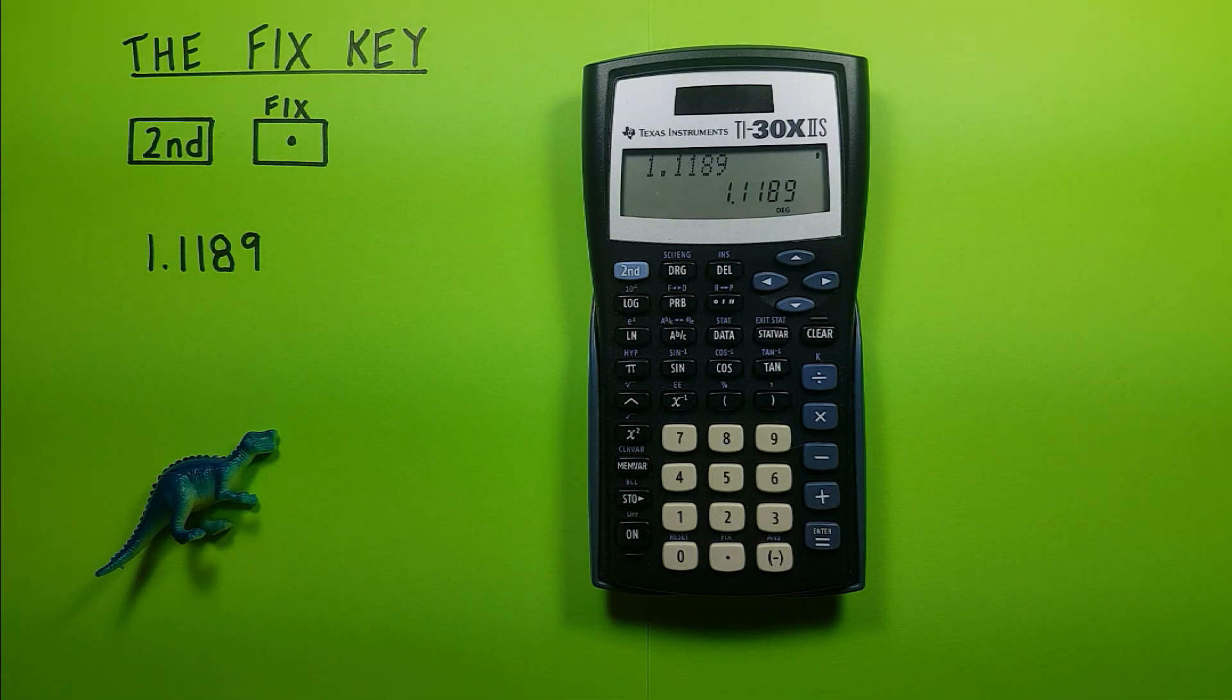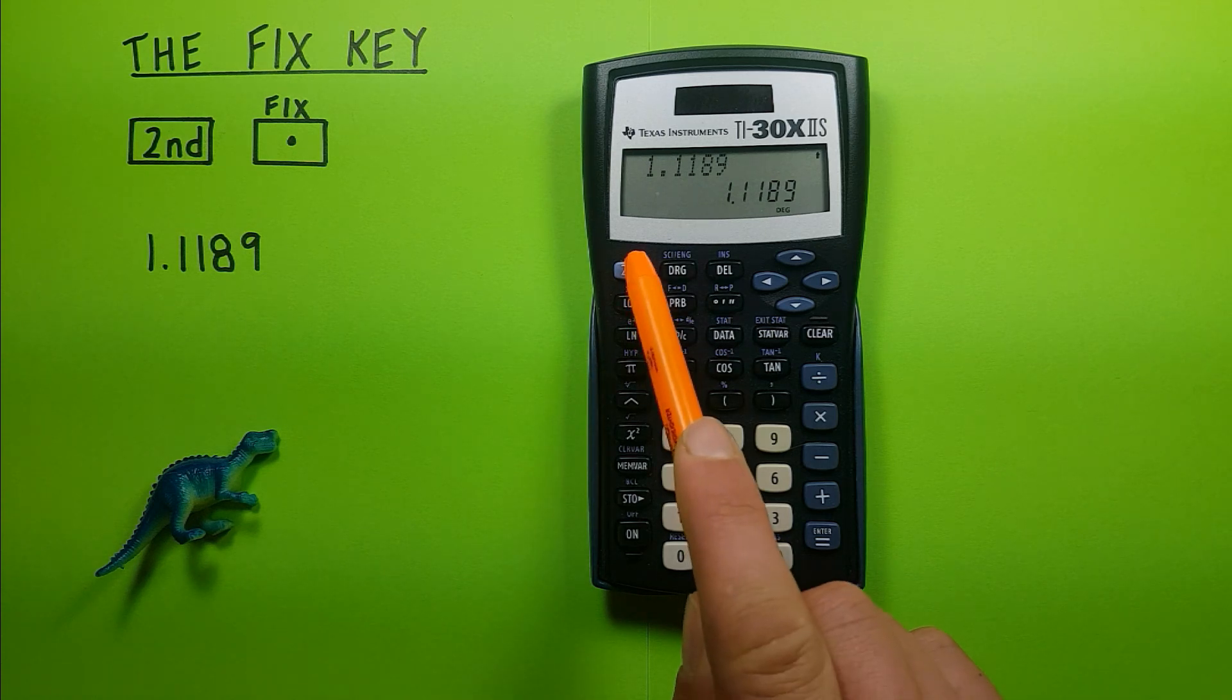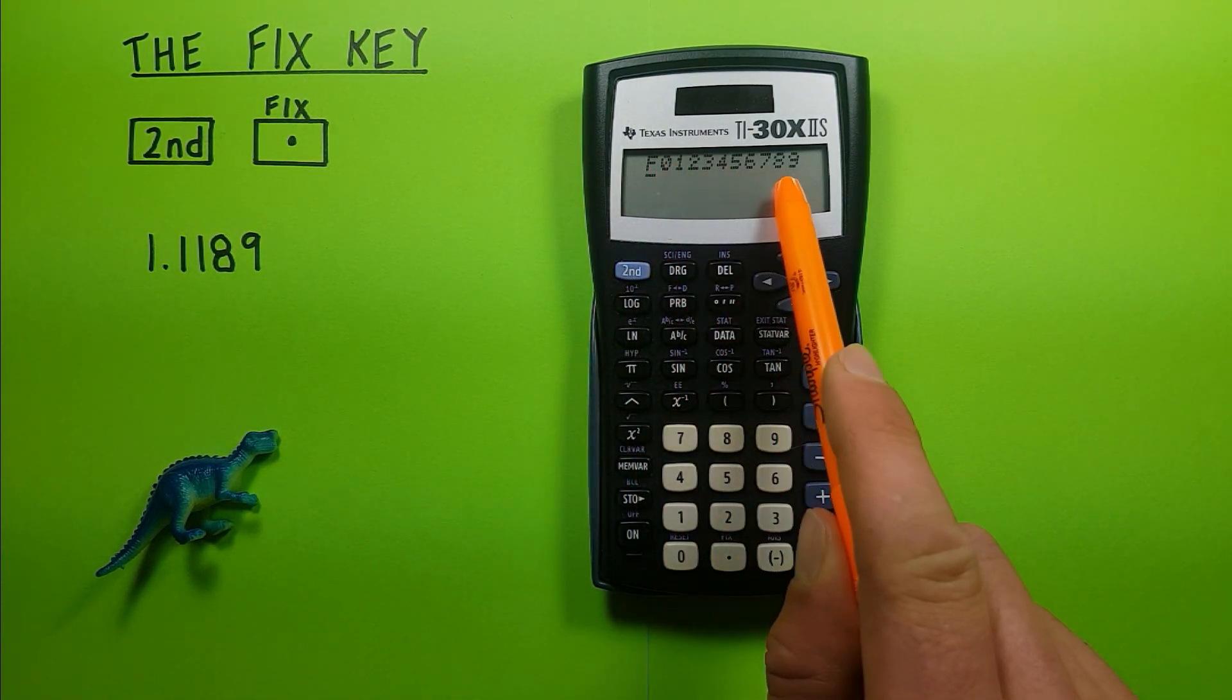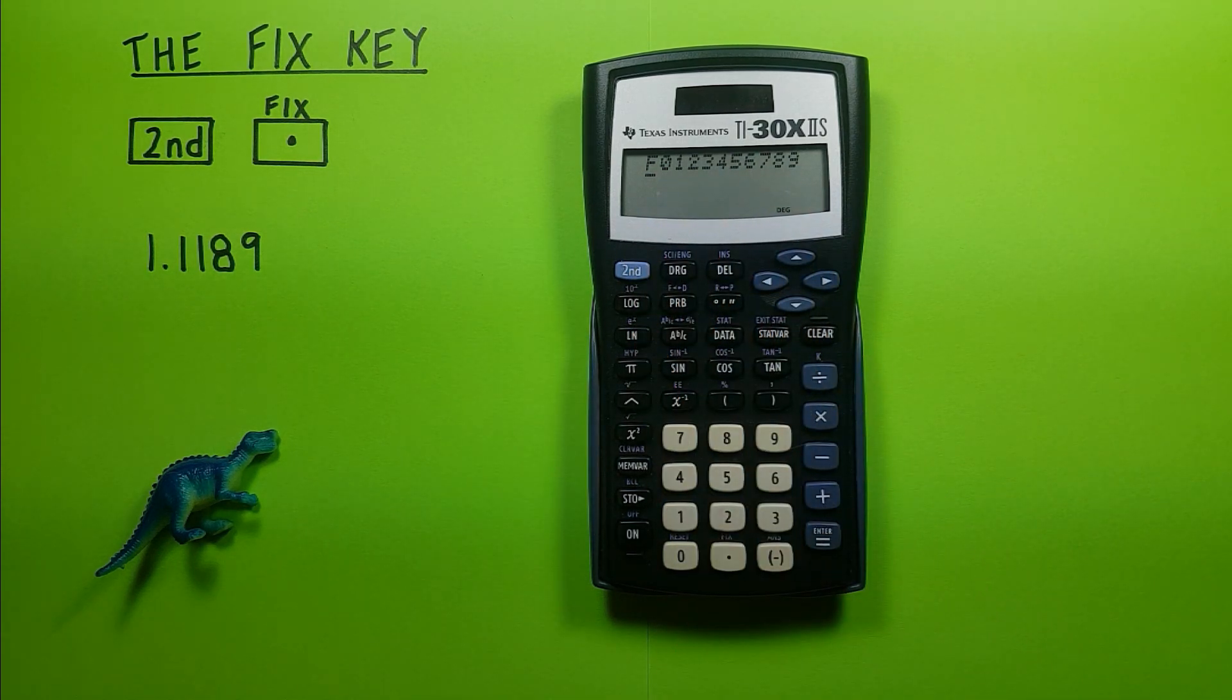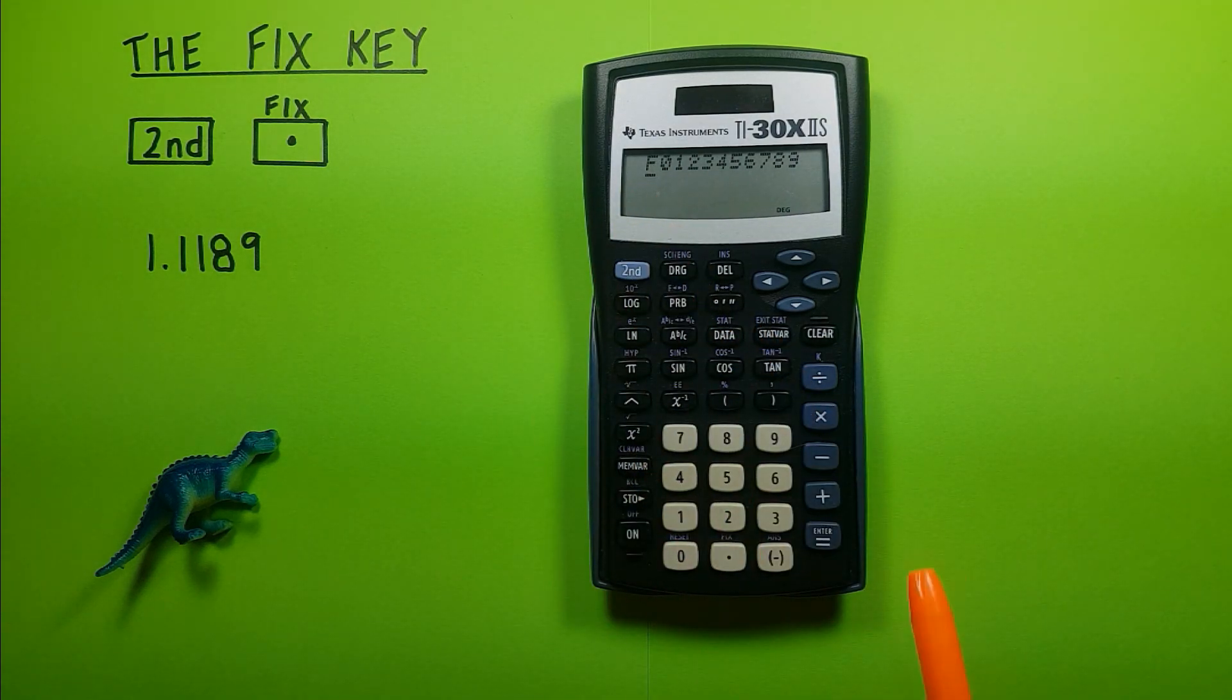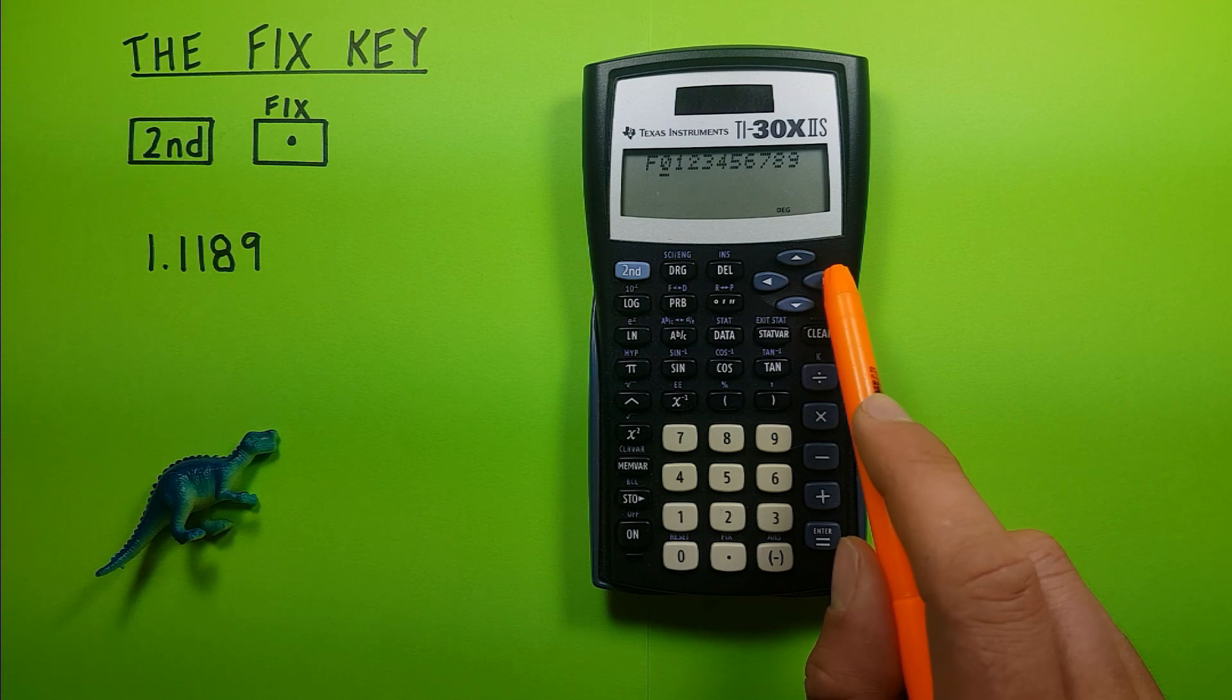But what if we wanted to round this to say three decimal places? Well to do this we can press the second function key and then the fix key and you see we get this screen here. This is asking how many decimal places we want in our answer. F being the full decimals or the standard mode and then we can choose the number otherwise.